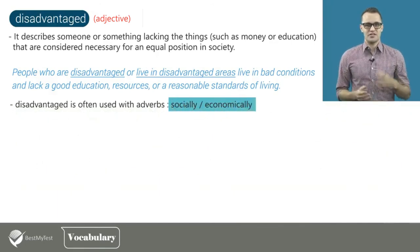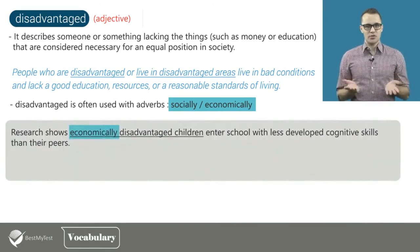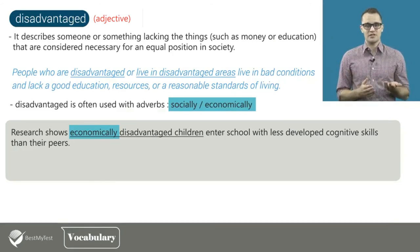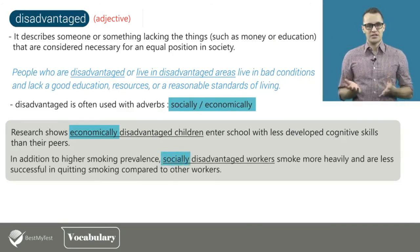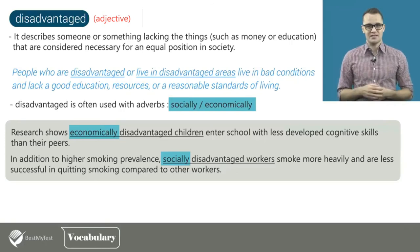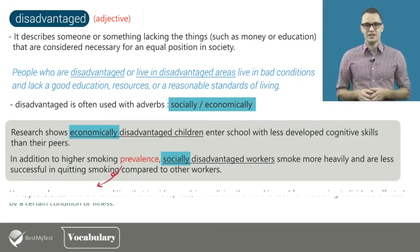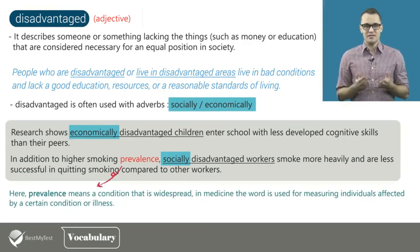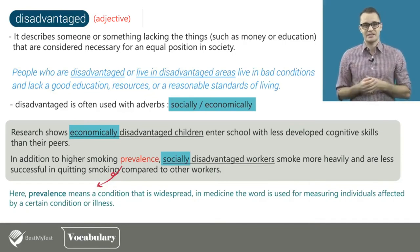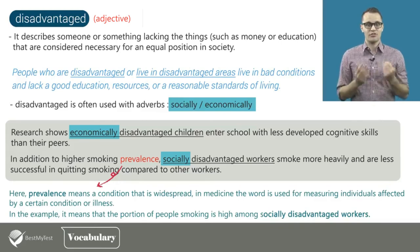Also, disadvantaged is often used with adverbs like socially and economically. For example: research shows economically disadvantaged children enter school with less developed cognitive skills than their peers. In addition to higher smoking prevalence, socially disadvantaged workers smoke more heavily and are less successful in quitting smoking compared to other workers. Here, the word prevalence means a condition that is widespread — in medicine, it measures individuals affected by a certain condition or illness. So in that example sentence, it means the portion of people smoking is high among socially disadvantaged workers.